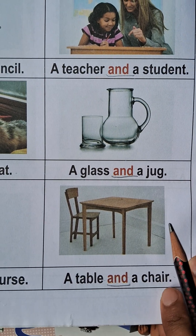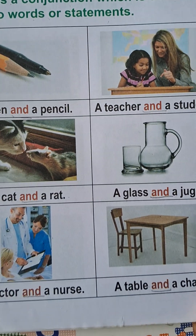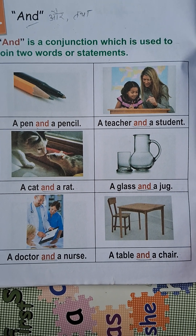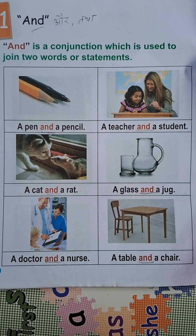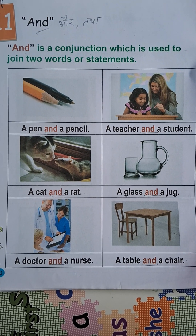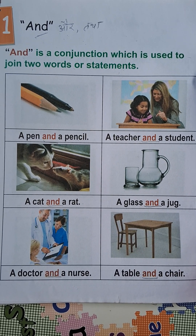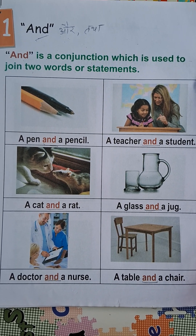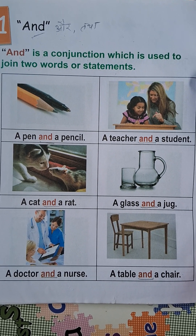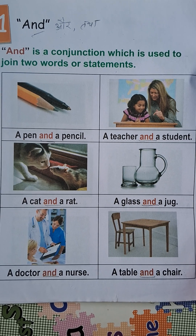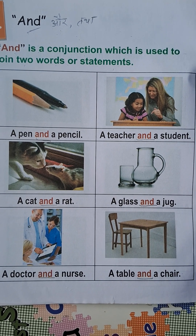So basically, 'and' is a conjunction which is used to join two words or statements. And ka use hum do sentences ya words ko jodne ke liye karte hain — and means 'or' in Urdu.